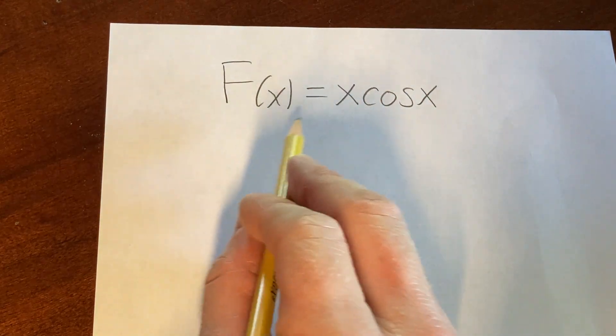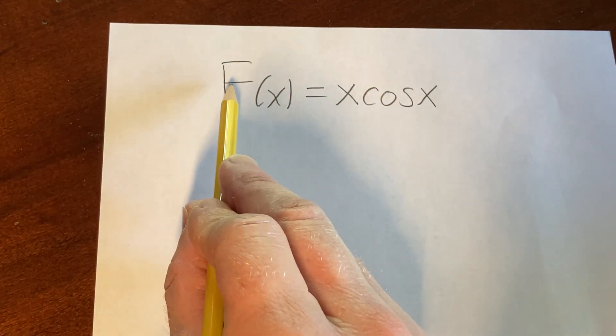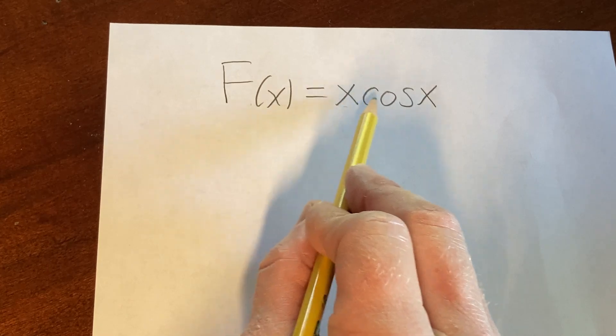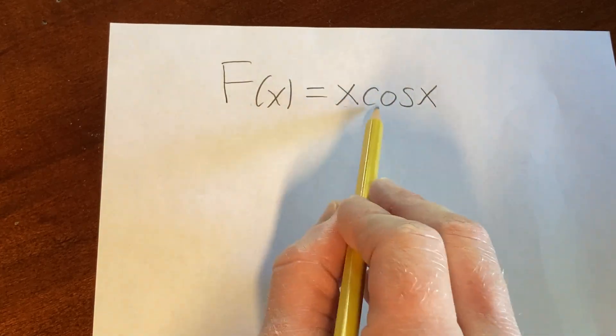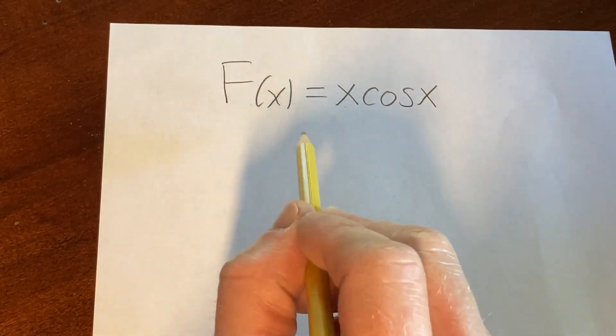Hi, in this video we're going to find a very simple derivative. We have big F of x equal to x times the cosine of x, and we're going to find the derivative of this function, big F of x.